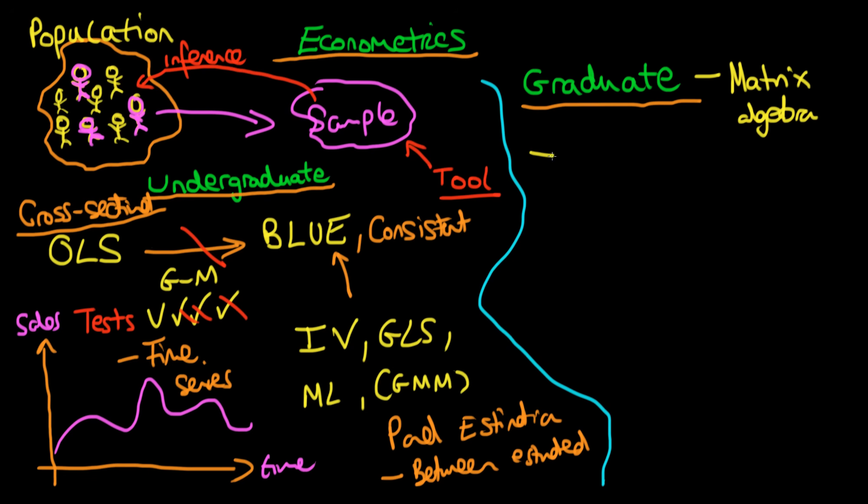Having this new knowledge about how we describe econometrics using matrices is going to allow us to discuss some estimators which we talked about in the undergraduate course but in much greater detail. We're going to talk about things like GLS, sure estimators. We're also going to discuss GMM which we're only going to cover a little bit in the undergraduate course.